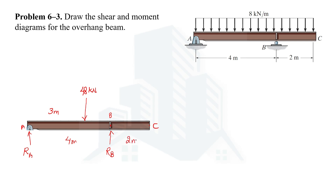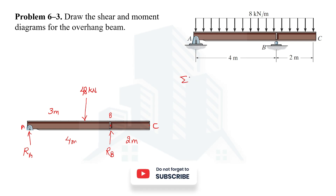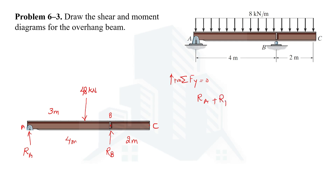The distance from A to B is 4 meters and from B to C is 2 meters. To find the support reactions, we use the conditions of equilibrium. Using the second condition — summation of all forces in the y-direction equal to zero, with upward forces positive — we get: RA + RB − 48 = 0, so RA + RB = 48 kN.